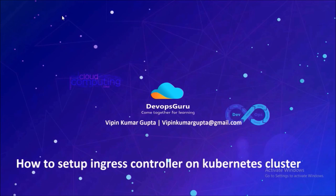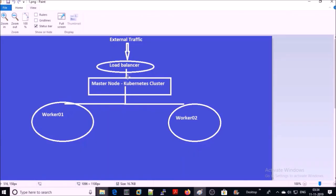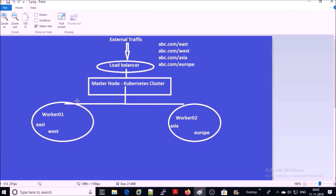Ingress controller supports application or virtual host routing on Layer 7 in the OSI model. Let's understand the ingress controller with examples. In my current Kubernetes cluster environment, external traffic goes to the load balancer and then to the Kubernetes worker machines. If you want to host multiple applications like abc.com, 123.com, xyz.com — all domains pointing to the same load balancer — the ingress controller will accept all traffic from the load balancer and route it to the appropriate containers across the worker machines.